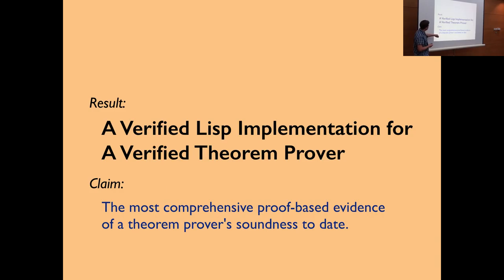This is the headline result and the claim about it: that this verified list implementation combined with the verified theorem prover is the most comprehensive proof-based evidence of theorem prover correctness to date. Although it doesn't show in the title, we're really proving something about the soundness of the logic of the prover and relating that to how machine code for the implementation runs on x86 — so it's really end-to-end in that sense.